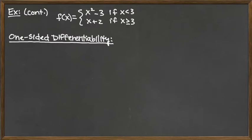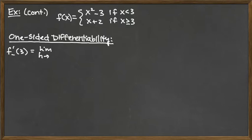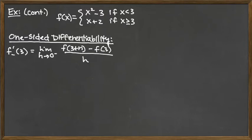For one-sided differentiability, we look at f minus prime of 3 — the left derivative. That would be the limit as h approaches 0 from the left of the difference quotient: f of 3 plus h minus f of 3, all over h. If that left-hand limit exists, the function is left differentiable at 3.